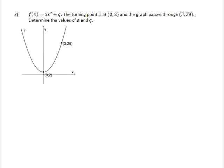Question 2. f of x equals ax squared plus q. The turning point is at 0, 2, and the graph passes through 3 and 29. Determine the values of a and q.